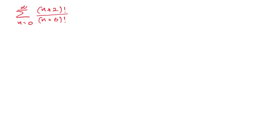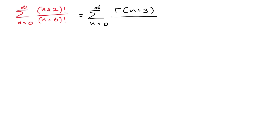First, we know we can convert factorial to gamma function. So I am going to take this as equal to the sum from n equals 0 to infinity of gamma of (n+3) over gamma of (n+7).